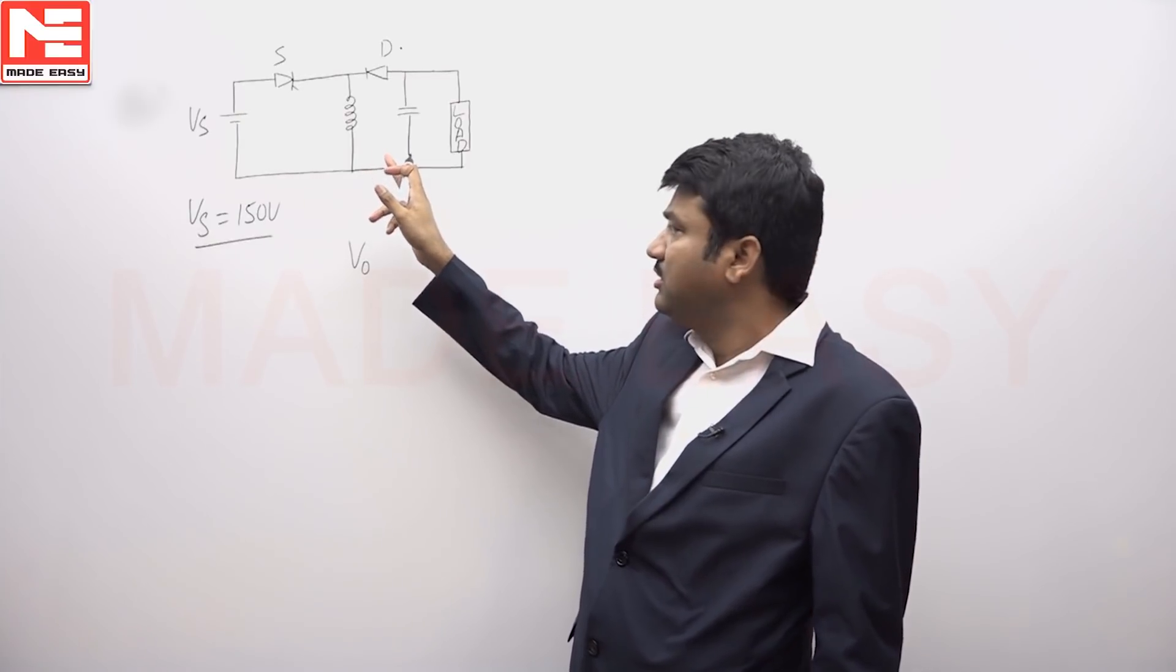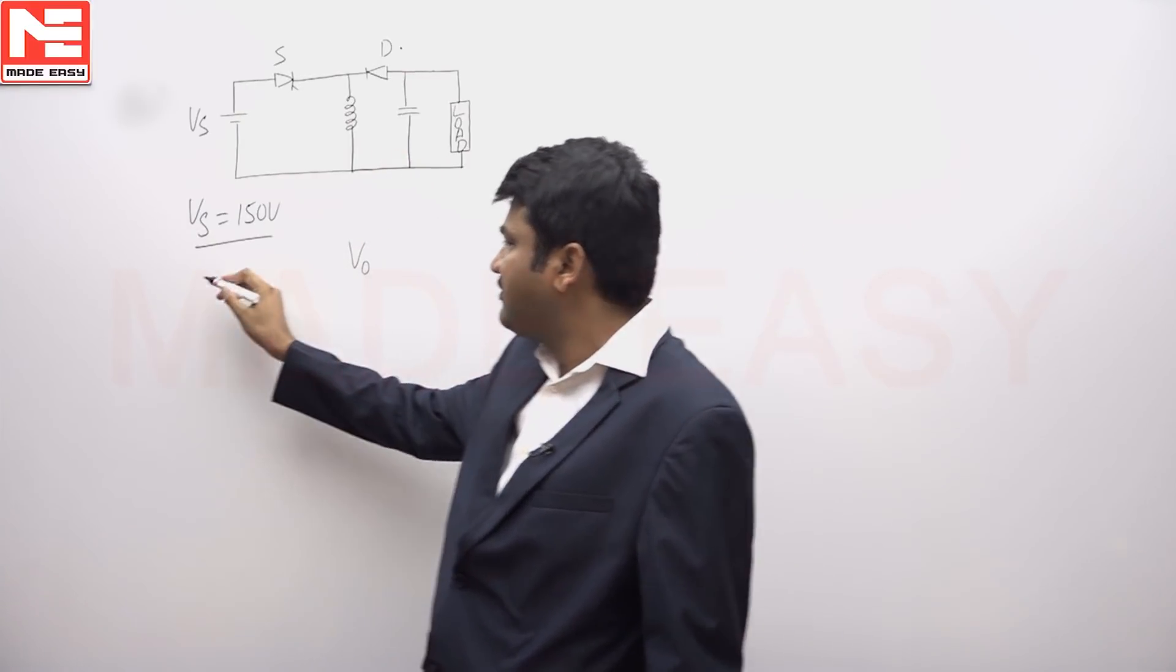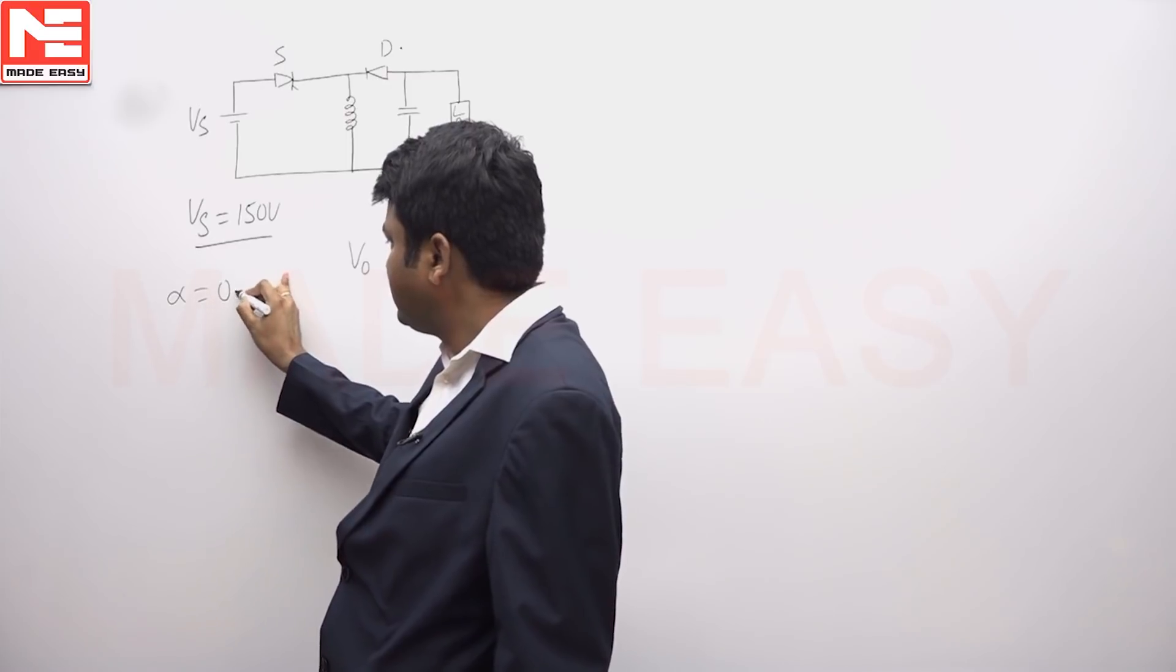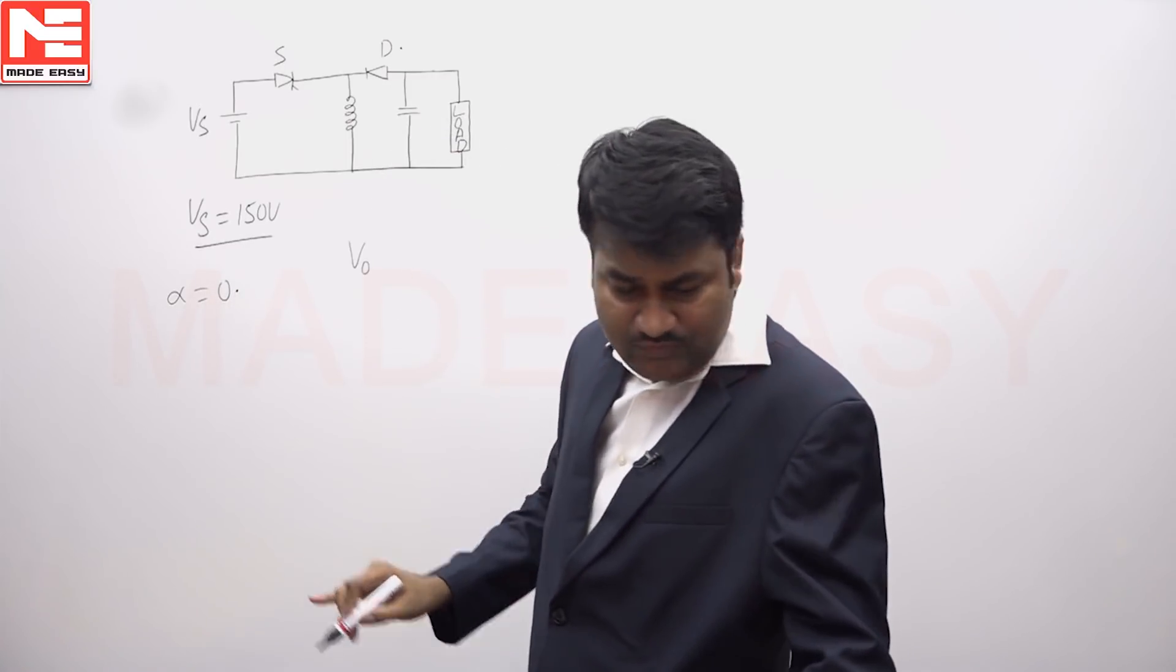It is given a buck-boost converter. The duty cycle alpha is equal to 0.4.